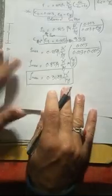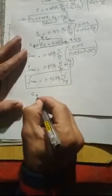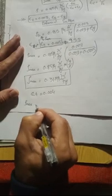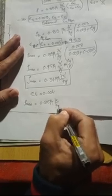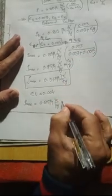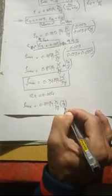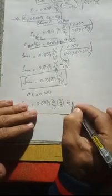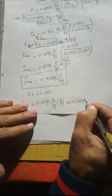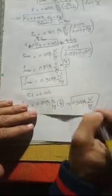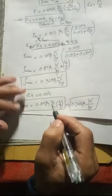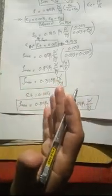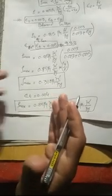Now, if we instead take ε_t = 0.004, we still get a ρ_max equation. Here ρ_max = 0.85 × β₁ × (f'c/fy) × [0.003 / (0.003 + 0.004)], which simplifies to 3/7. Multiplying through, the equation becomes: ρ_max = 0.364 × β₁ × (f'c/fy). You must remember these equations because we will use them in examples to calculate the ρ_max value.